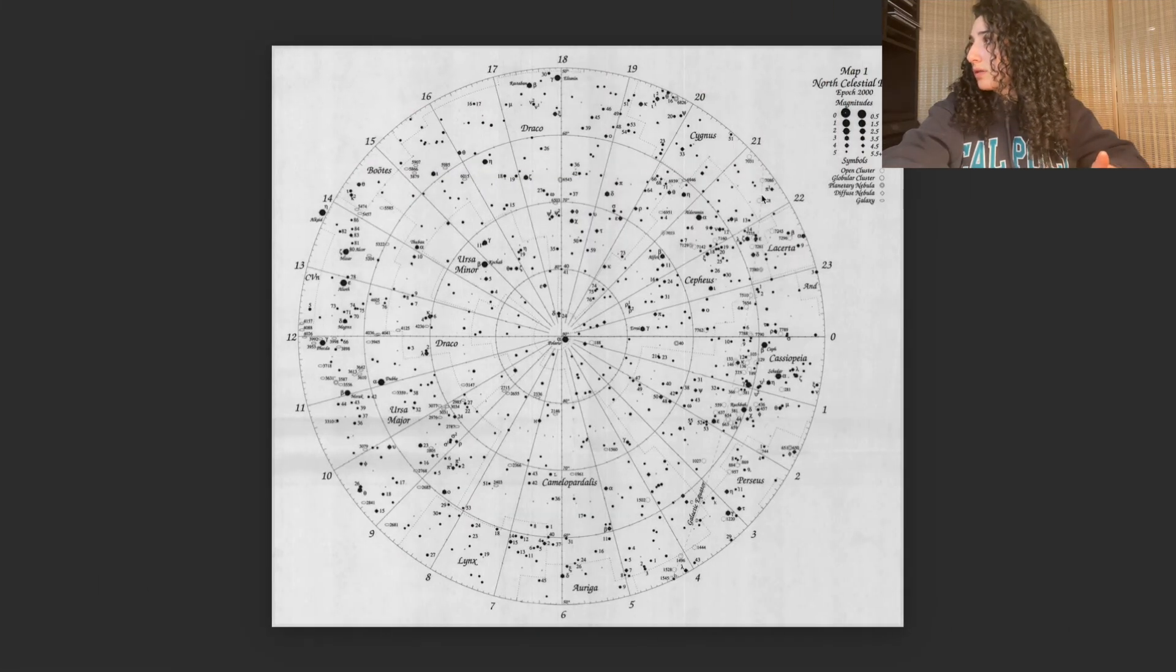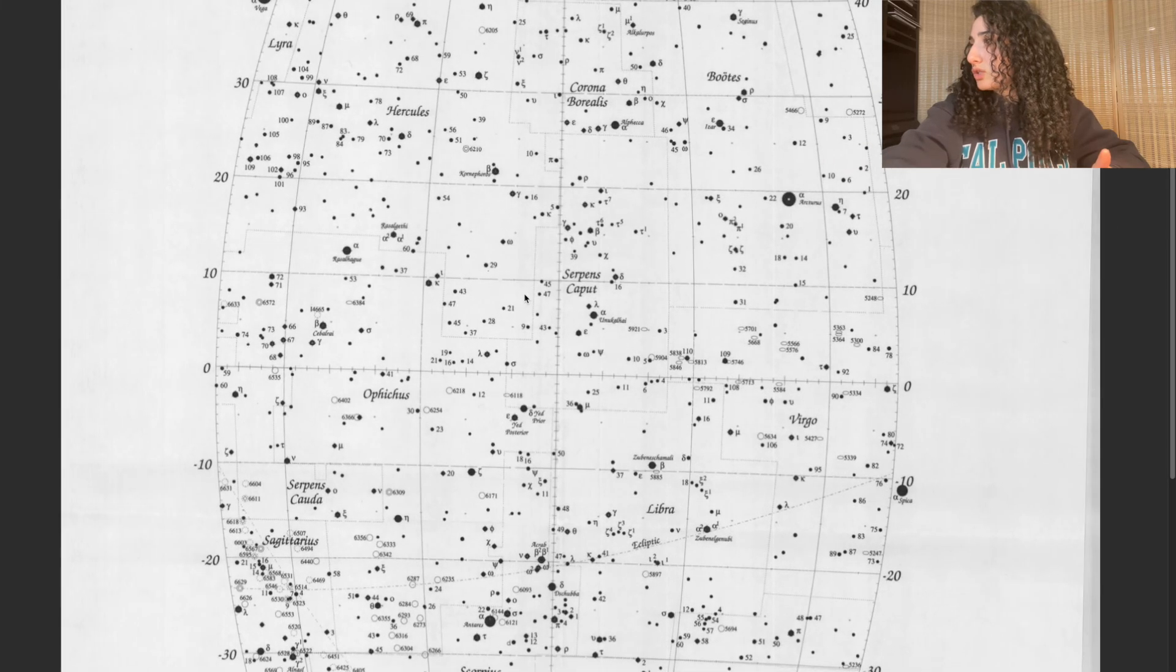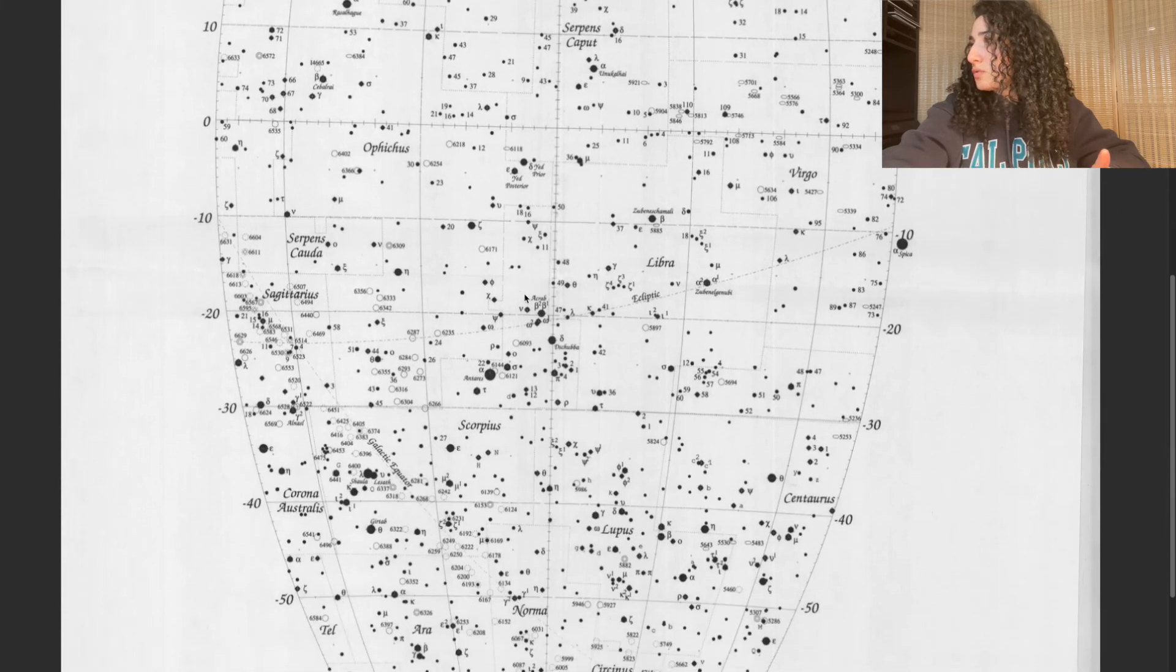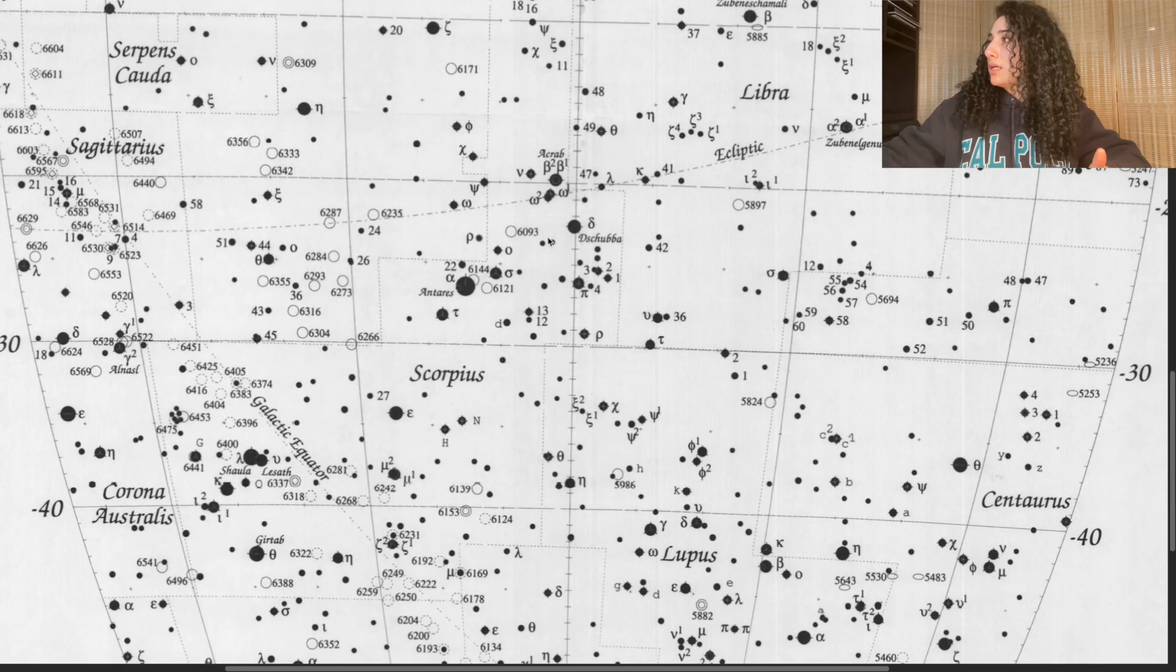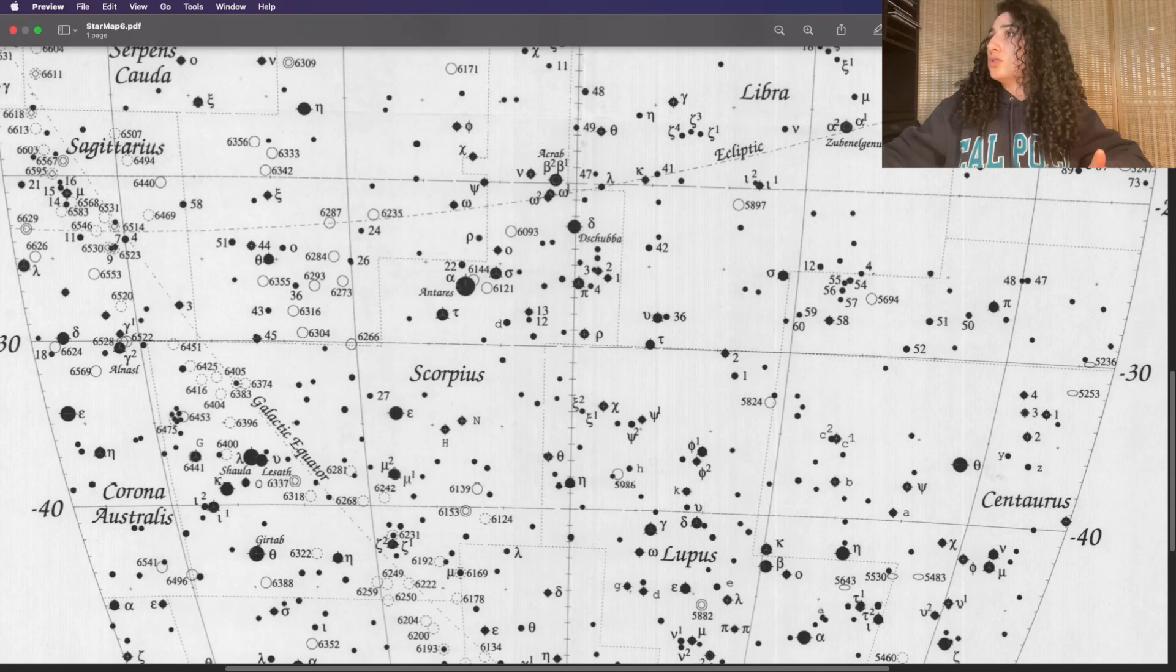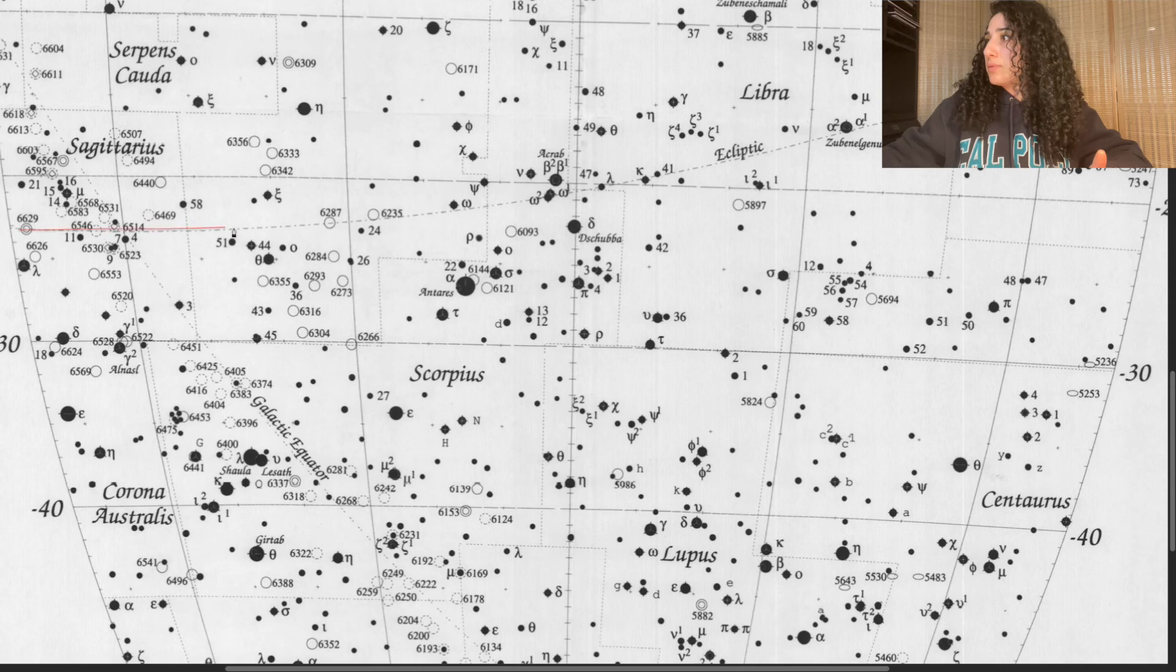However, if we keep going through, maybe we can find another point of intersection that might be useful for us. And in this case, I do see it. So right here, we actually have the curve of the ecliptic. So I'll go ahead and draw that again, just outlining it. So this is the curve of the ecliptic.